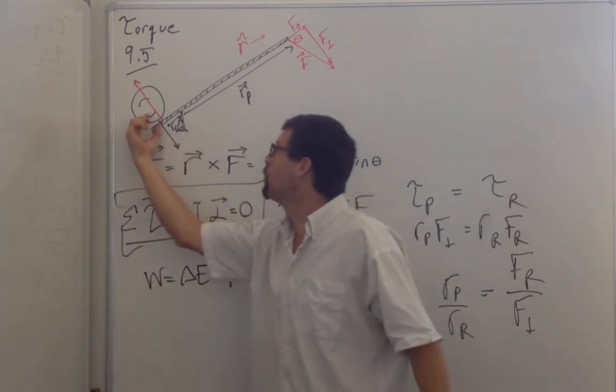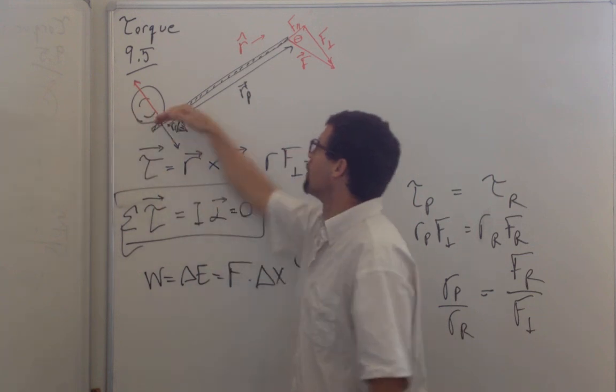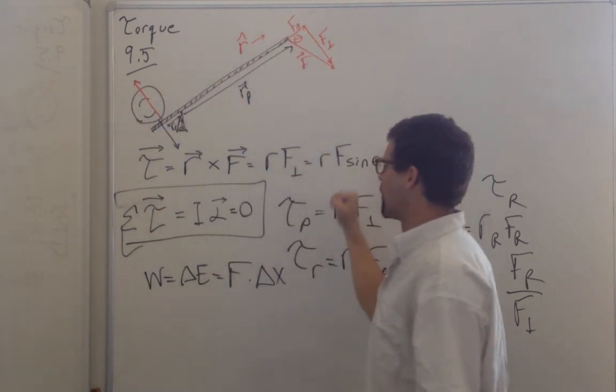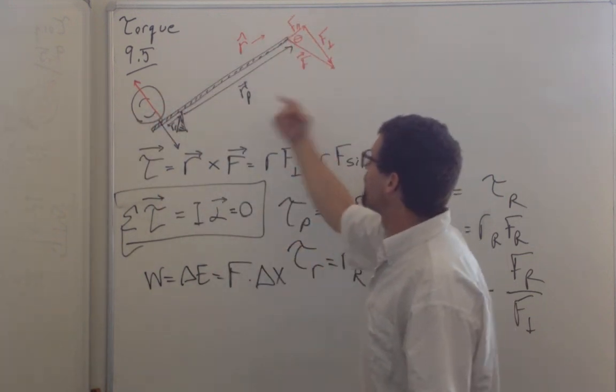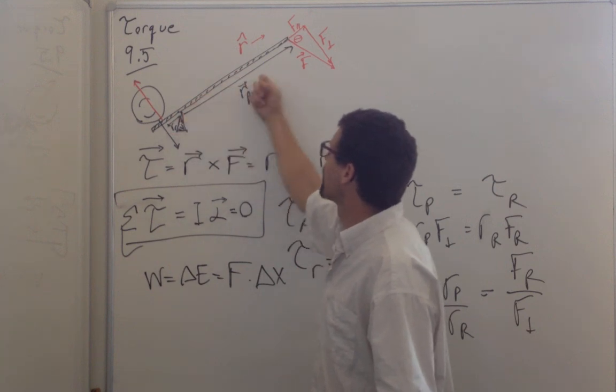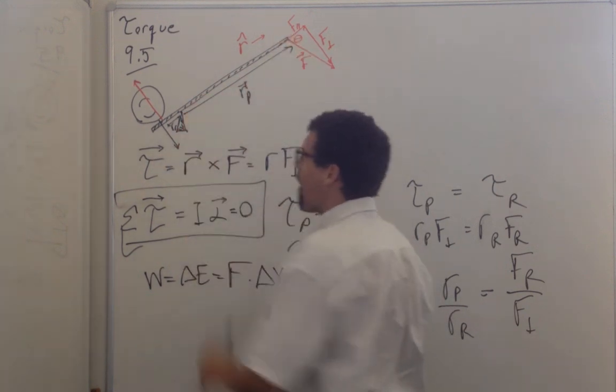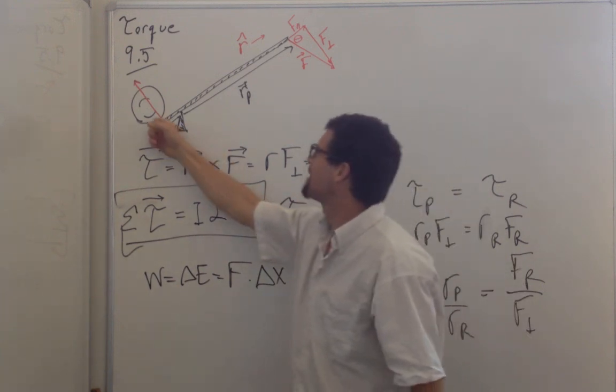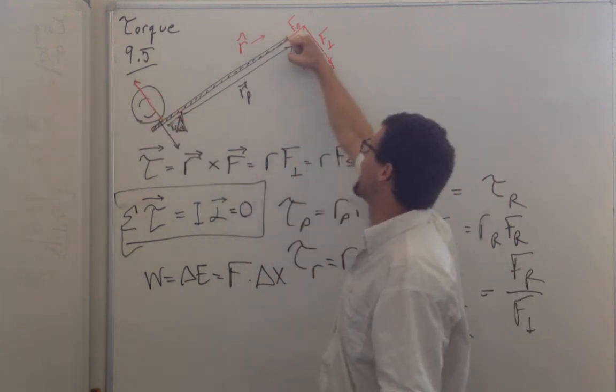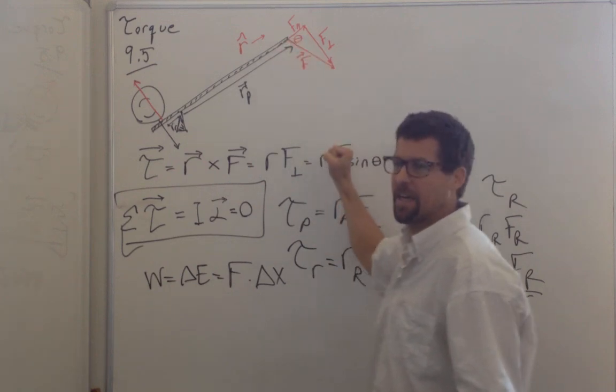And sure, in order to move this guy a small amount, I'm going to have to move my arm very much. So if this is one-tenth the length of this, I'll have to move ten times as far. But I'll get ten times as much force out on this side as I apply on this side.